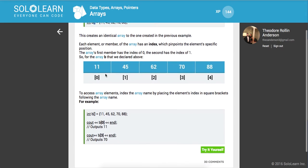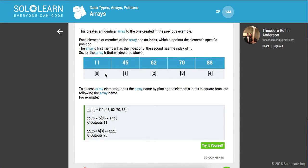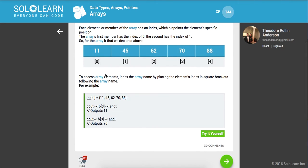Each element or member of the array has an index which pinpoints the element's specific position. The array's first member has the index of zero because like all data structures they're all zero-based. The array's first member has the index of zero, second has one and so on. So we can see 11 at index zero, 45 at one, 62 at two and so on.